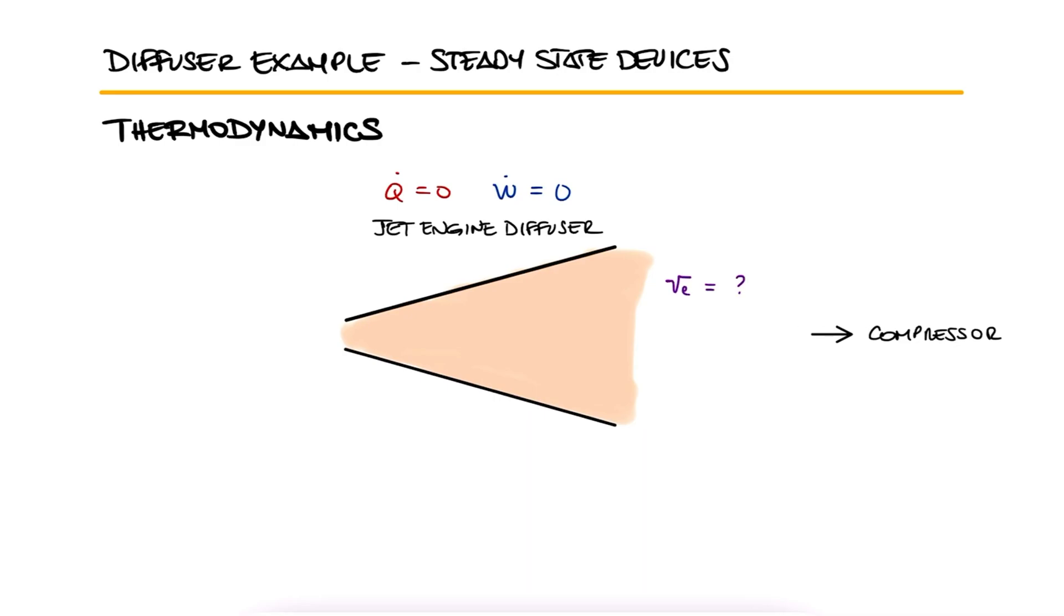Calculate the velocity at the exit of the diffuser when air at 110 kPa and 27 degrees Celsius enters it with a velocity of 330 meters per second and the exit state is 240 kPa and 77 degrees Celsius.